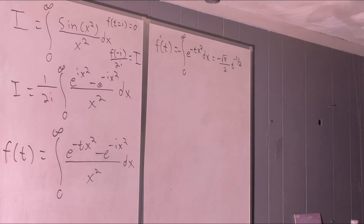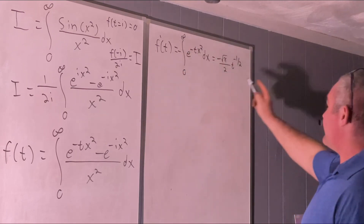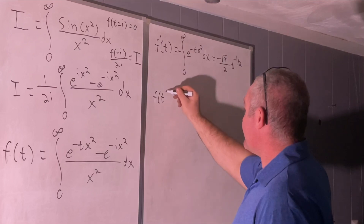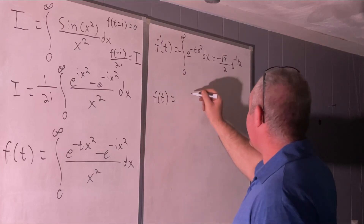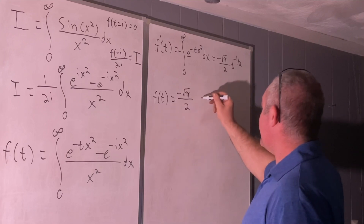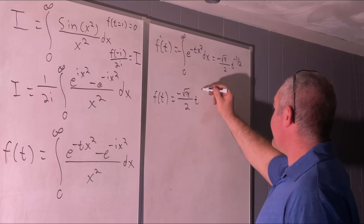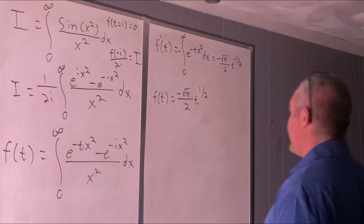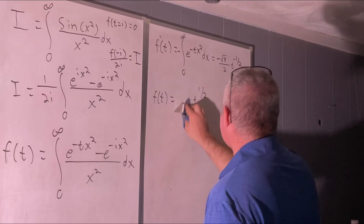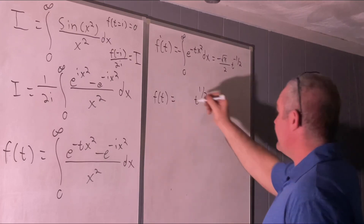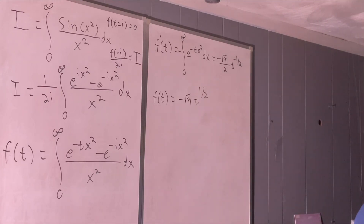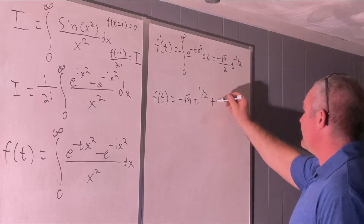Anti-differentiating both sides with respect to t gives us f of t, which is negative square root of pi over 2 times t to the one half over one half — or times 2 — giving us negative square root of pi times t to the one half, plus c.